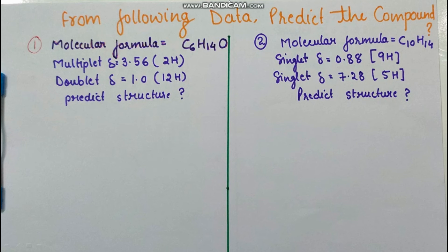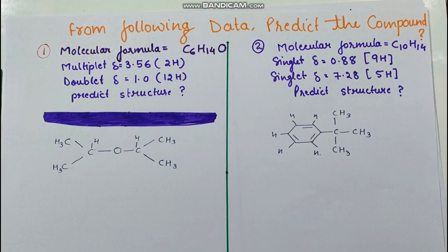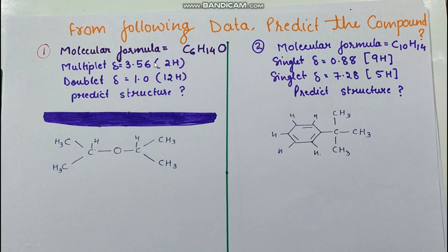From the following data, predict the compound. Pause the video, try to solve, then match answers. Molecular formula: C₆H₁₄O. We are getting a multiplet at δ 3.56 for 2 hydrogens, and a doublet at δ 1.0 for 12 hydrogens. First, since we have no signal near δ 7, there is no ring or aromatic group — confirmed also by the unsaturation formula.